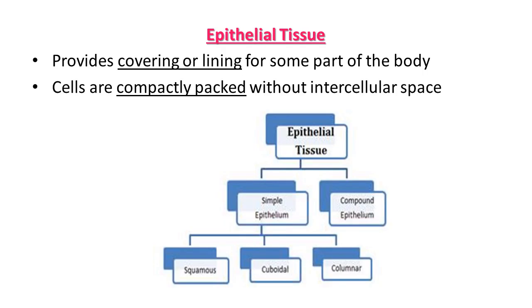First, epithelial tissue. As the name suggests, 'epi' means outermost, so epithelial tissue provides covering or lining for some parts of the body. Cells are compactly packed without any intercellular spaces. Epithelial tissue is further classified into two types: simple epithelium and compound epithelium.